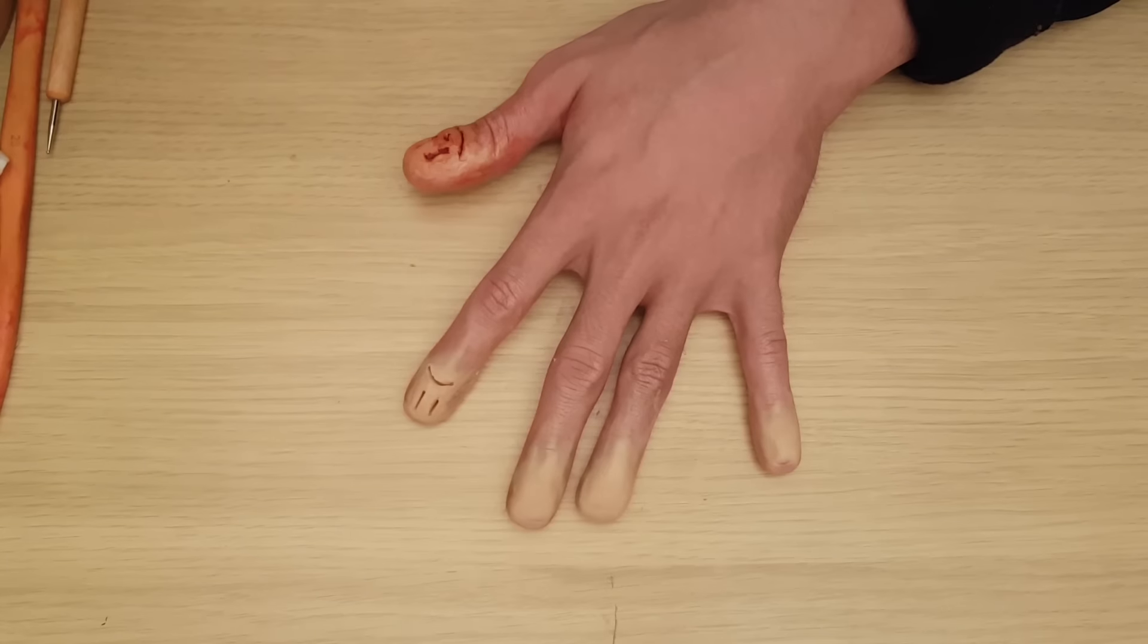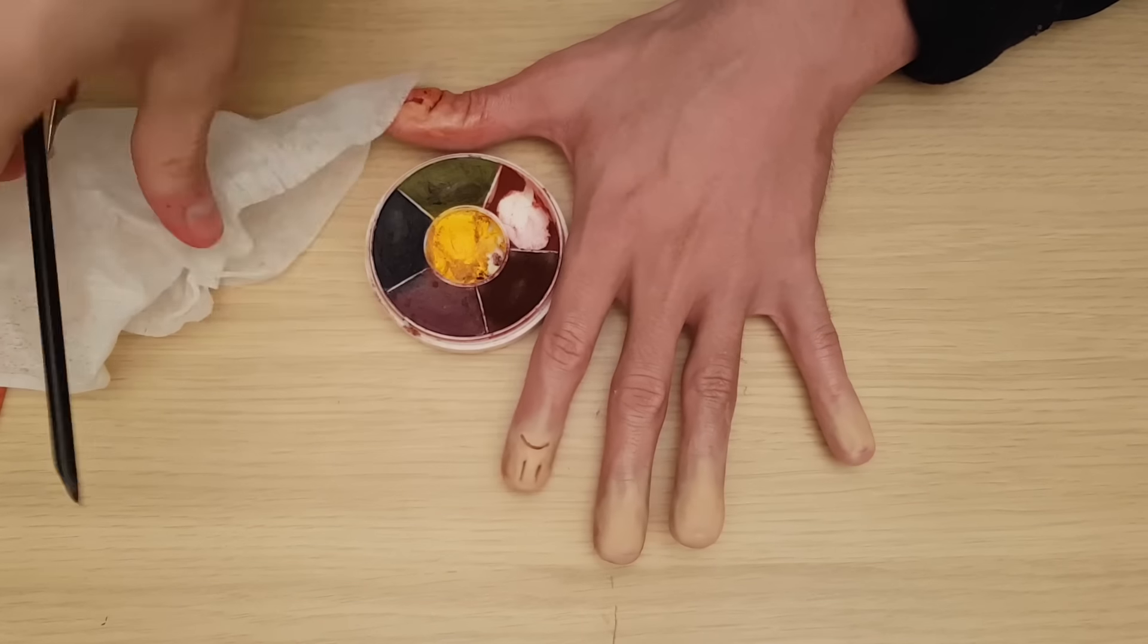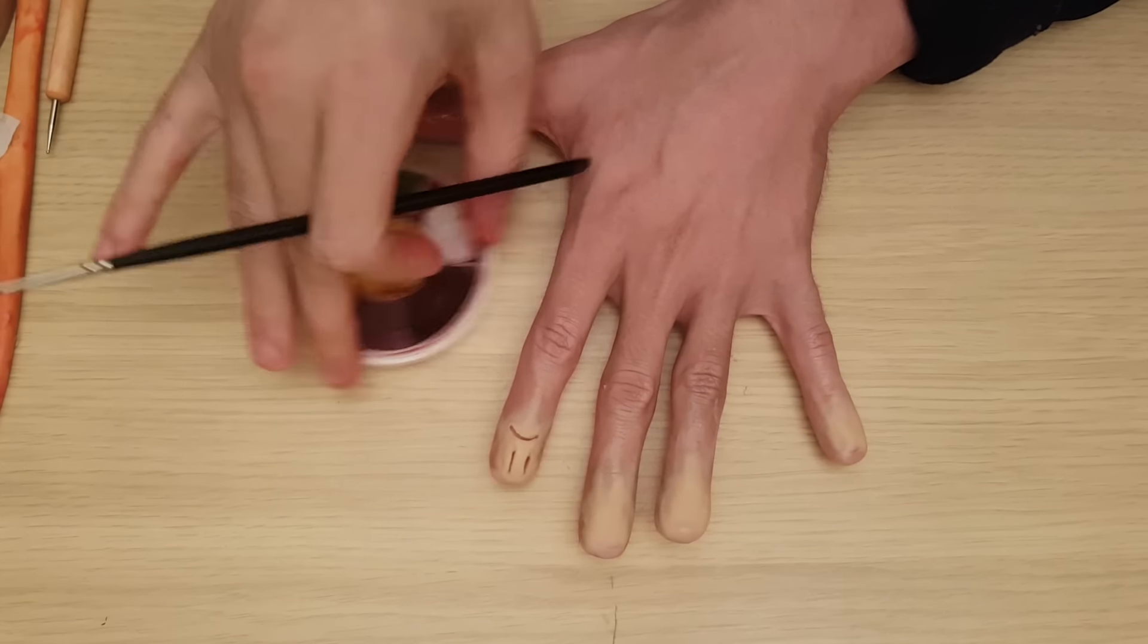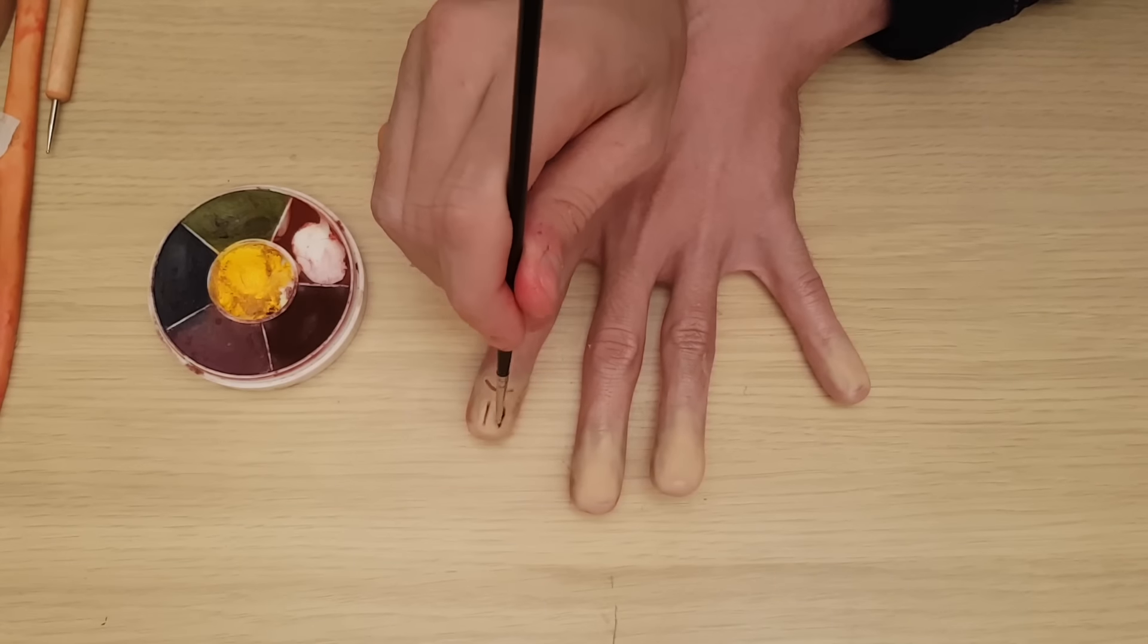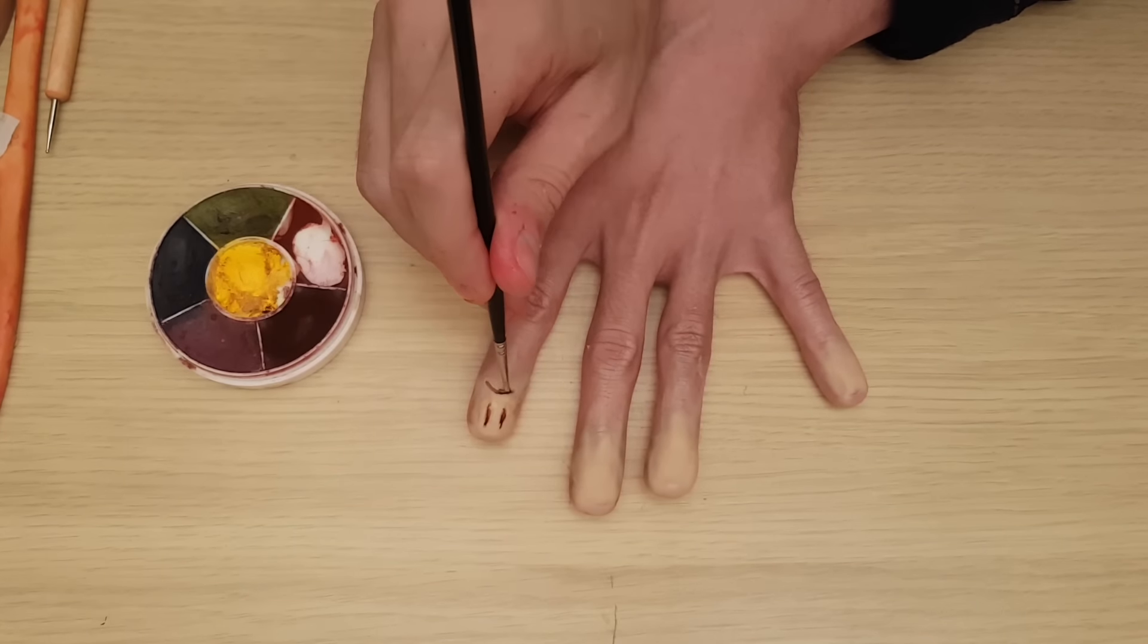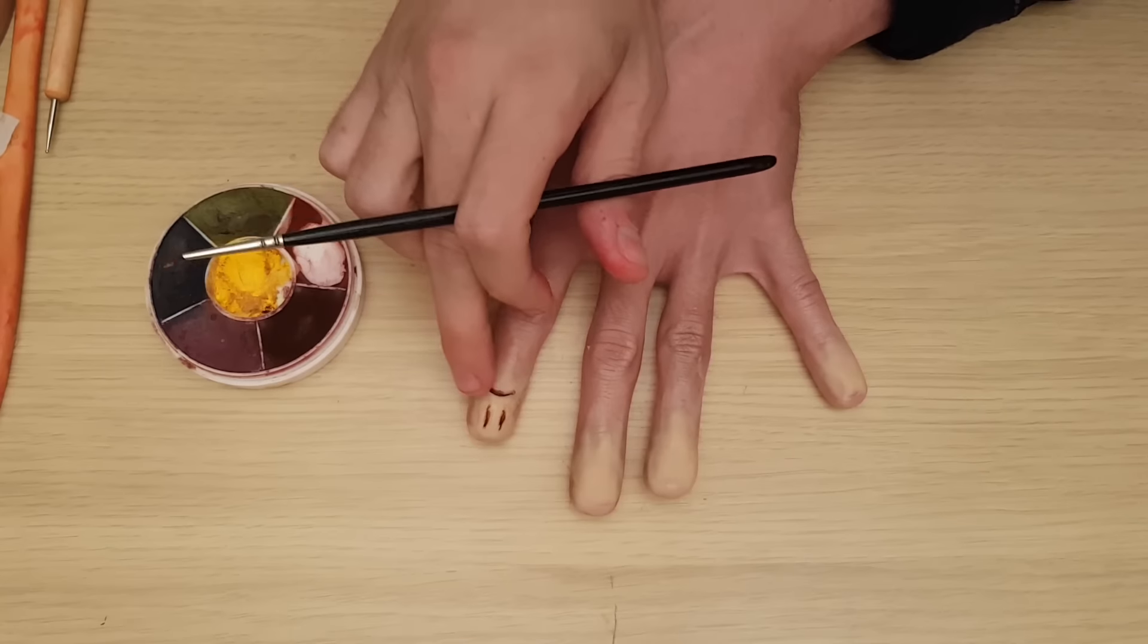Now I'm going to take a small brush and I'm just going to take a dark color and fill in where we just dip the face. Just like so. This will give the cut depth, so it looks deeper than it actually is.